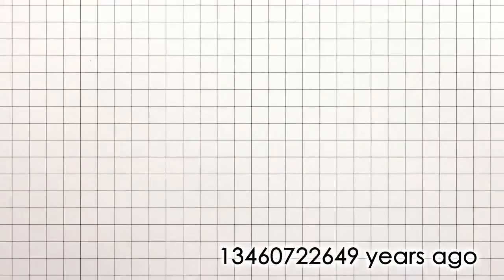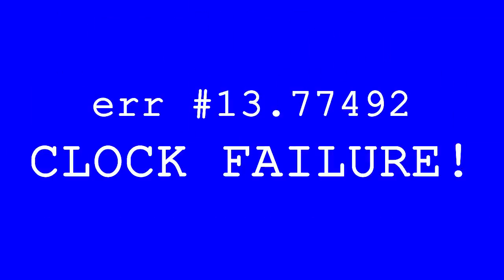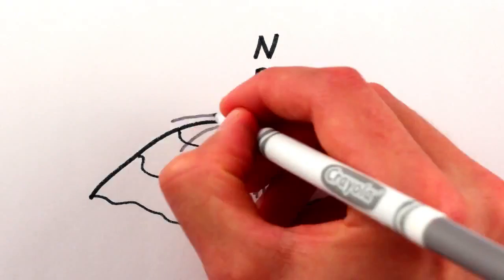Back when space was so incredibly compressed and everything was ridiculously hot and dense, our mathematical models of the universe break down so much that time doesn't even make sense. It's kind of like how, at the North Pole, the concept of North breaks down.